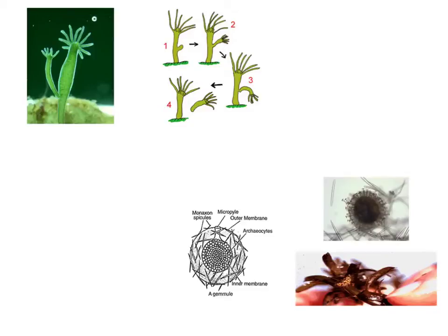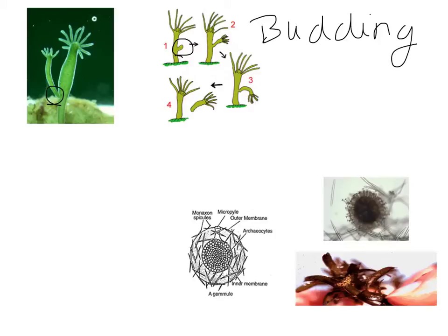The first example is budding. During budding, the offspring grows out of the body of the parent. Examples of organisms that do this would be things like a hydra. You can see it growing out of the body of the parent, basically until it's mature enough to break off into its own organism.